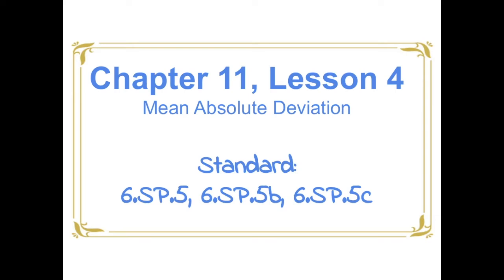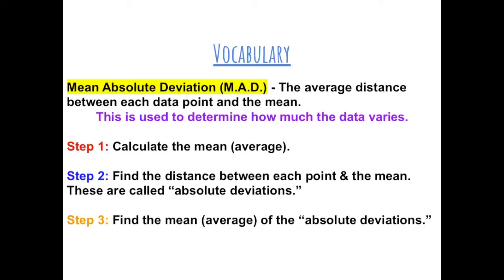Chapter 11, Lesson 4: Mean Absolute Deviation. Mean Absolute Deviation, or MAD for short, is the average distance between each data point and the mean. This is used to determine how much the data varies.